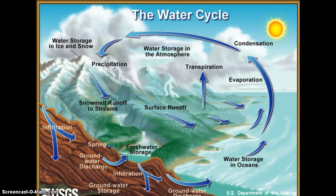Evapotranspiration is broadly defined as the water lost to the atmosphere from the ground surface, evaporation from the capillary fringe of the groundwater table, and the transpiration of groundwater by plants whose roots tap the capillary fringe of the groundwater table. (USGS 2014.) When we discuss transpiration, we refer specifically to evaporation of water from plant leaves.